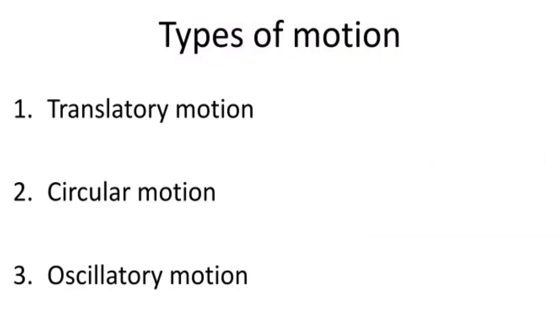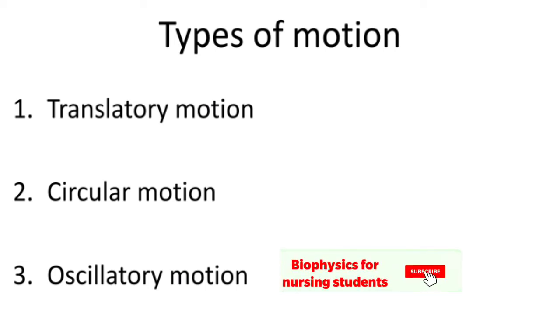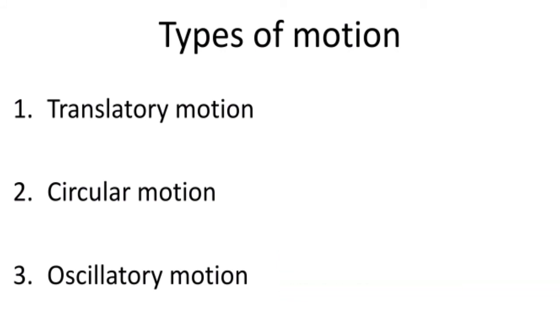Now coming to the types of motion — there are 3 types of motion: translatory motion, circular motion, and oscillatory motion. We will see in brief about each type of motion.